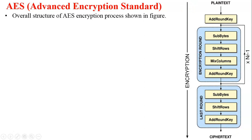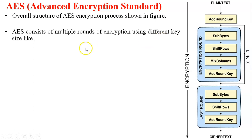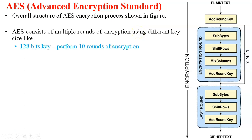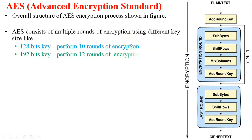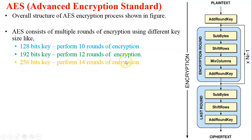AES uses block cipher technique and can consist of multiple rounds of encryption using different key sizes. If you want to encrypt data using a 128-bit key, you have to perform 10 rounds of encryption. If using a 192-bit key, it performs 12 rounds of encryption, and a 256-bit key performs 14 rounds of encryption.